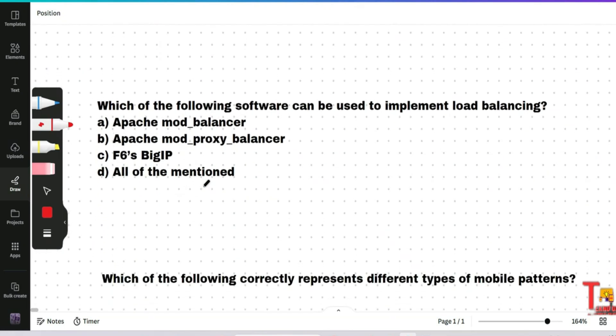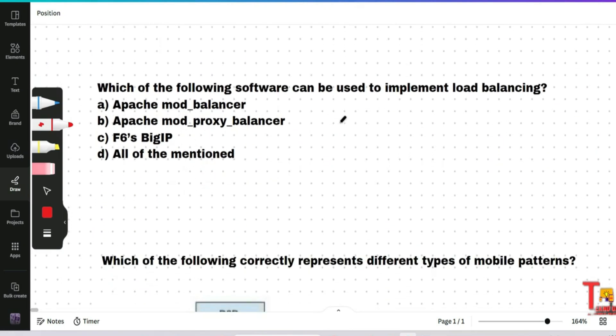Okay, the next question is which of the following software can be used to implement load balancing: Apache mod balancer, Apache mod proxy balancer, F6 Big IP, or all of them mentioned? What will be the correct answer? Okay, let me answer that. Option B will be correct: Apache mod proxy balancer. Actually, load balancing can be used to increase utilization and throughput, lower latency, reduce response time, and avoid system overload.